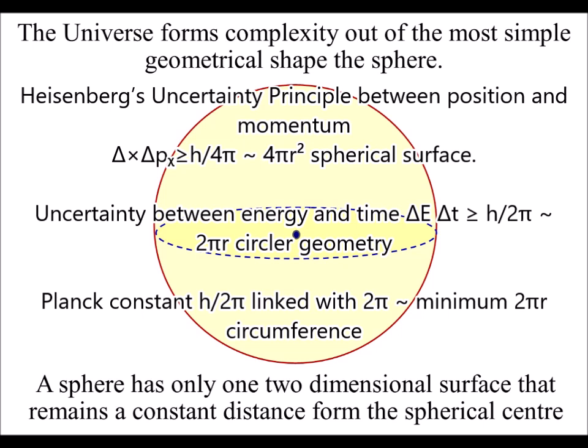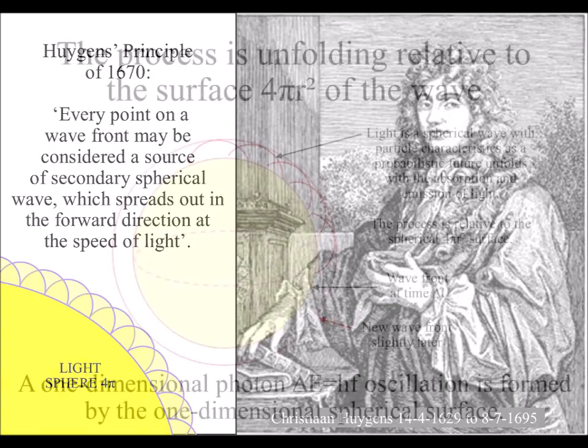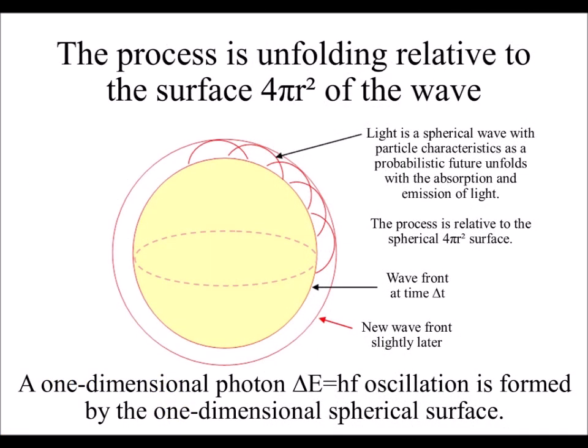The 4pi can represent spherical geometry. This can be based on Huygens' Principle of 1670 that says every point on a wavefront has the potential for a new spherical wave.